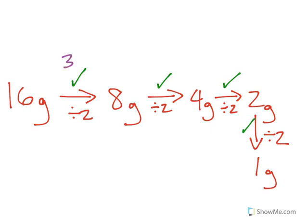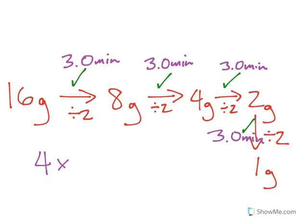Well, if each half-life is 3 minutes, and there were 4 half-lives that occurred, each one being 3 minutes, then really, all we have to do is multiply the number of half-lives times the actual half-life itself. So 4 times 3 minutes gives us 12 minutes.